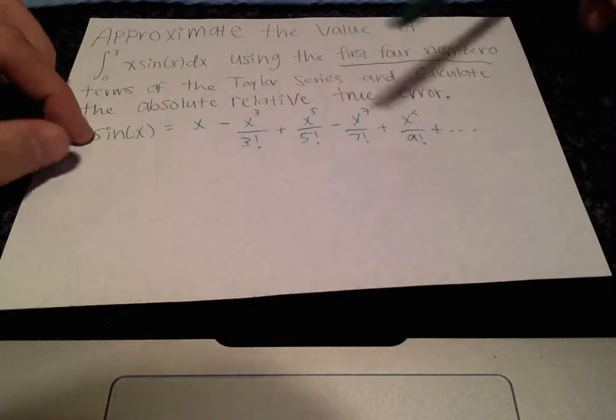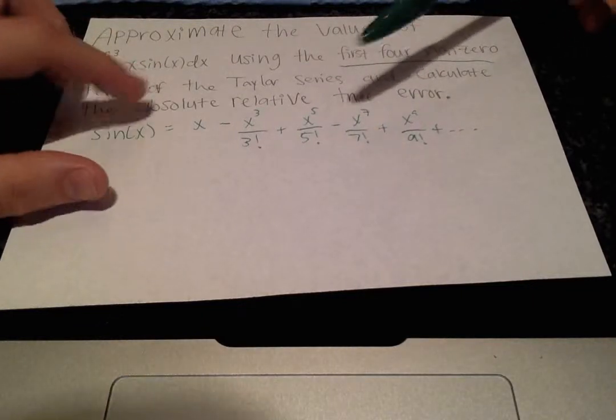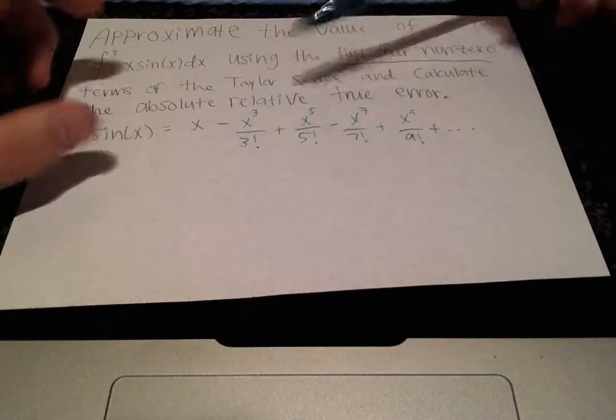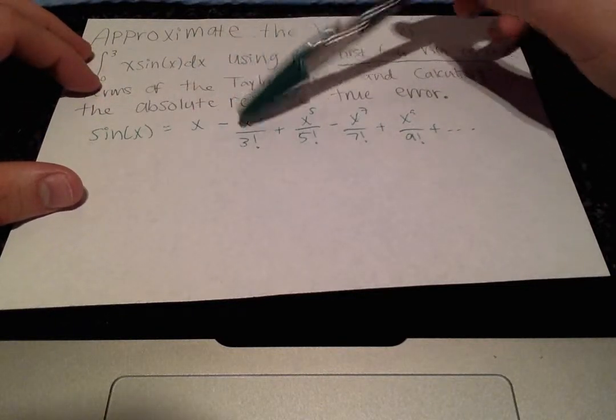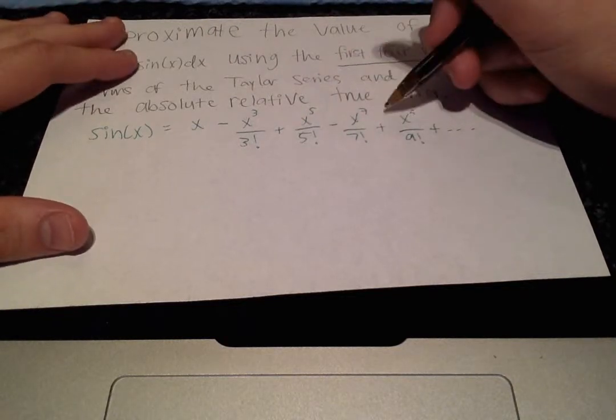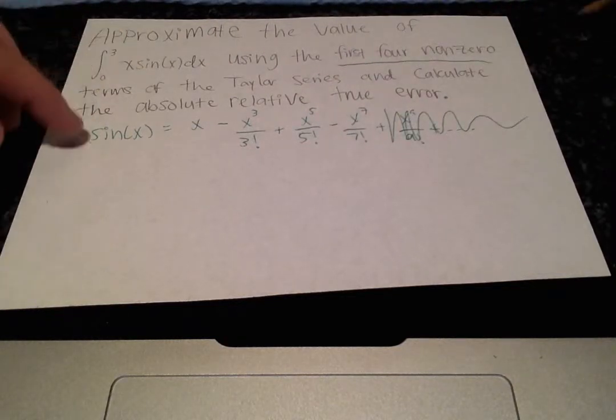And we needed to do that first before we could actually write this as x sin of x. So they tell us to use the first four non-zero terms, so we count 1, 2, 3, 4, and anything after that we can leave out.